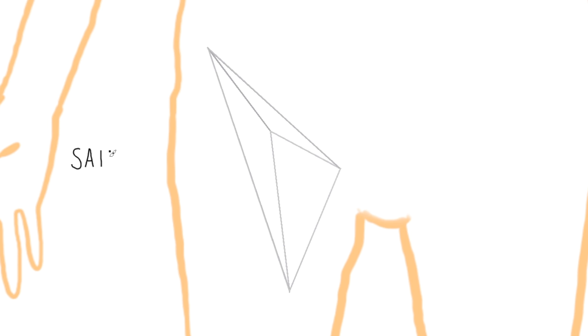Given that the femoral triangle is a 3D space containing some important anatomical structures, think of it as a pyramid. The mnemonic SAIL helps us to remember the lateral, medial and superior borders. That's sartorius, adductor longus and the inguinal ligament.